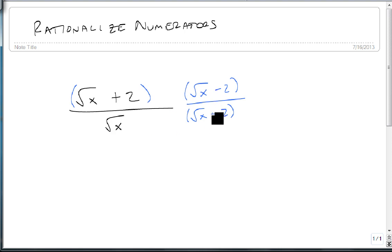And I multiply it on the top and the bottom. So now I get the square root of x squared minus 2 squared on top and the square root of x times the square root of x minus 2 on bottom.